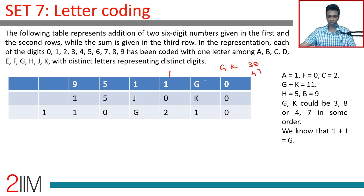3, 8 and 4, 7. So this could be 3. This could be 8. Or it could be 8 and 3. 4, 7, 7, 4. If G were 3, then J would have to be 2. Hang on, hang on, wait a second. J cannot be 2 because C is already 2. So this possibility is ruled out.